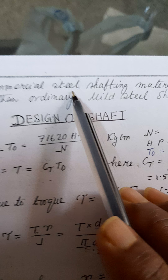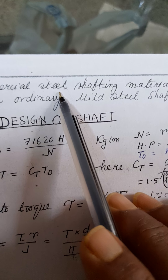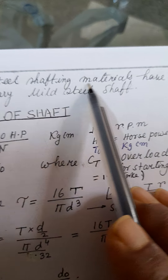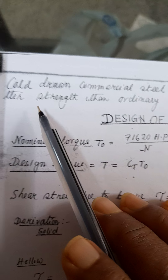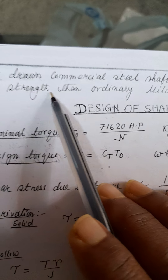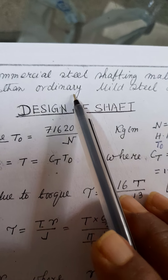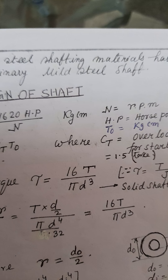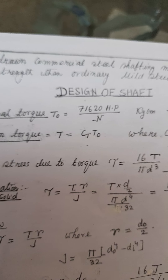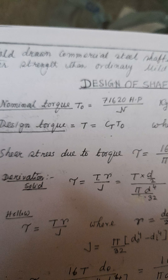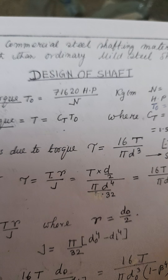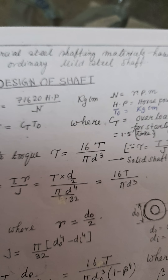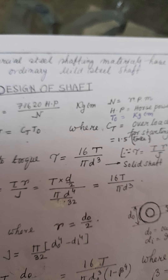With cold-drawn commercial steel, shafting materials have better strength than ordinary mild steel. This design of shafting I have already done in the previous video.